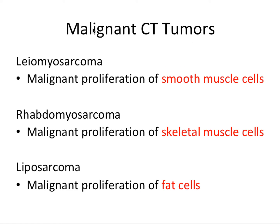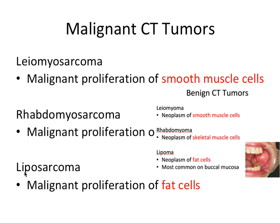Lastly, we have three more malignant connective tissue tumors to cover. The first is leiomyosarcoma, which is a malignancy of smooth muscle cells. We have rhabdomyosarcoma, a malignancy of skeletal muscle cells. And lastly, we have a malignancy of fat cells. Here's a slide from my previous video on benign connective tissue tumors, and you might notice how similar these names are — they have the exact same cell of origin. So really, you just have to memorize the benign ones and you'll have the malignant ones memorized too. That's a nice little twist to have in terms of studying for these tumors.